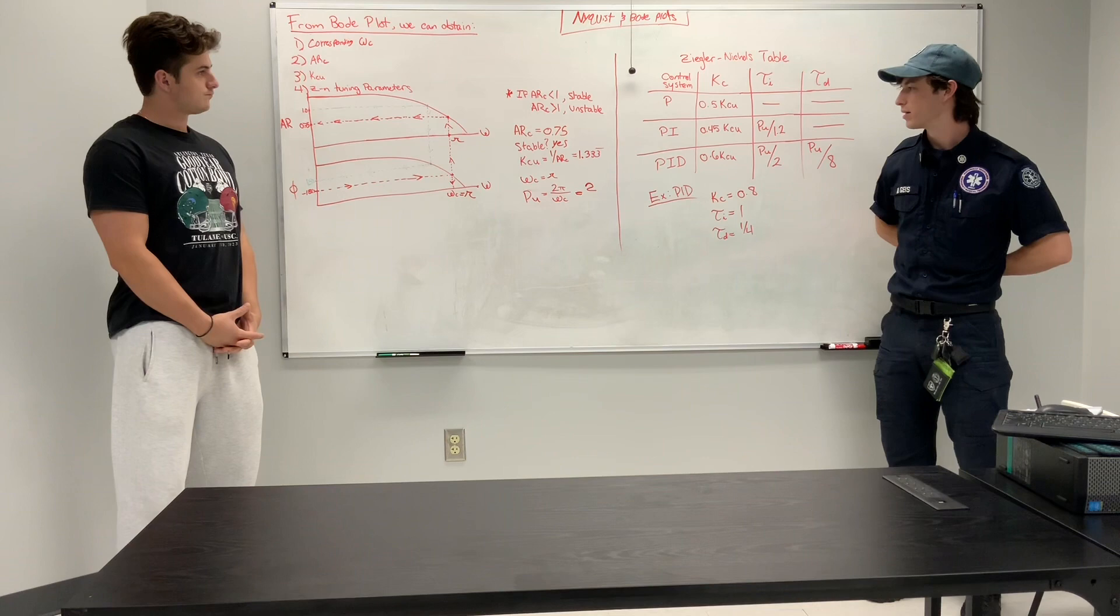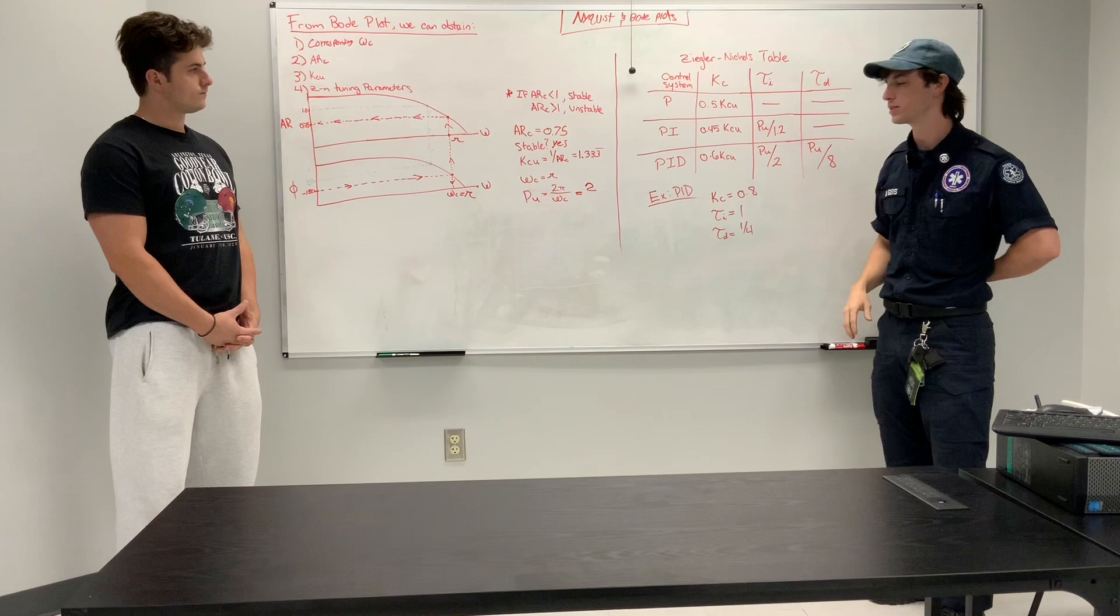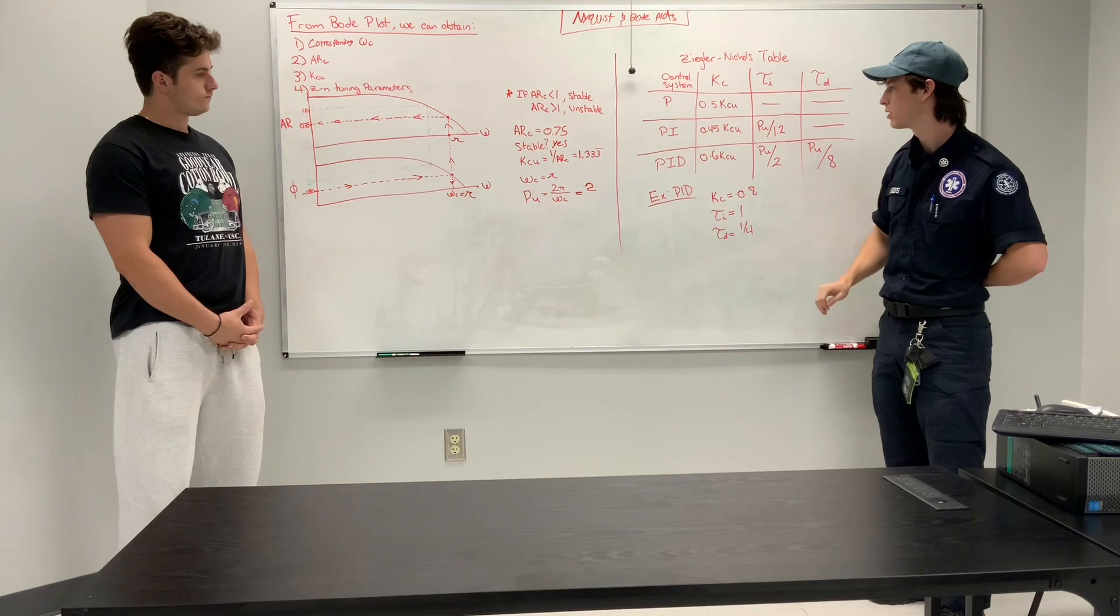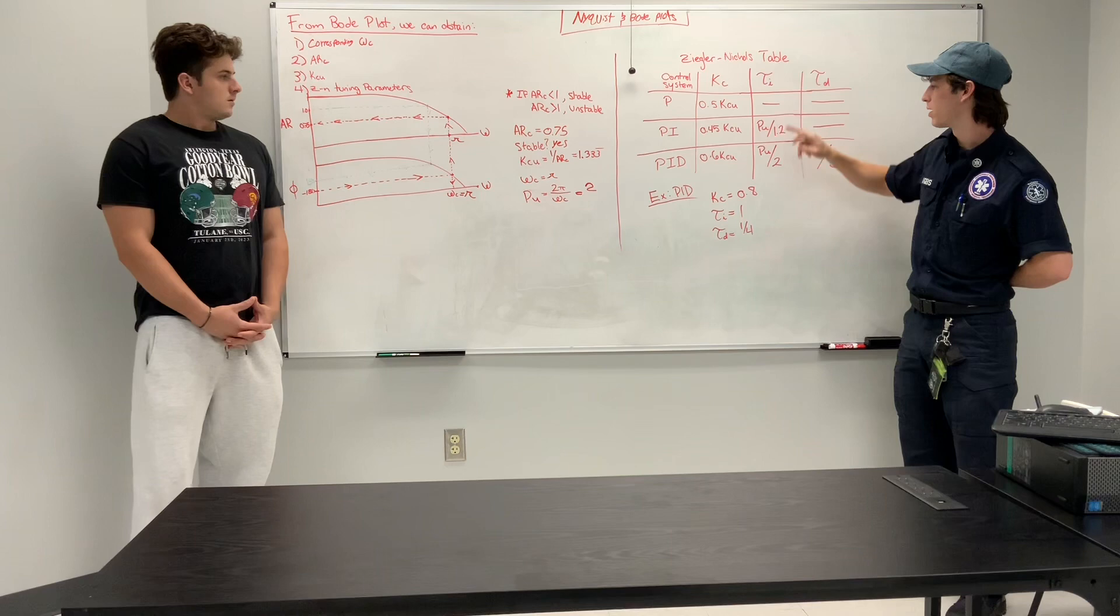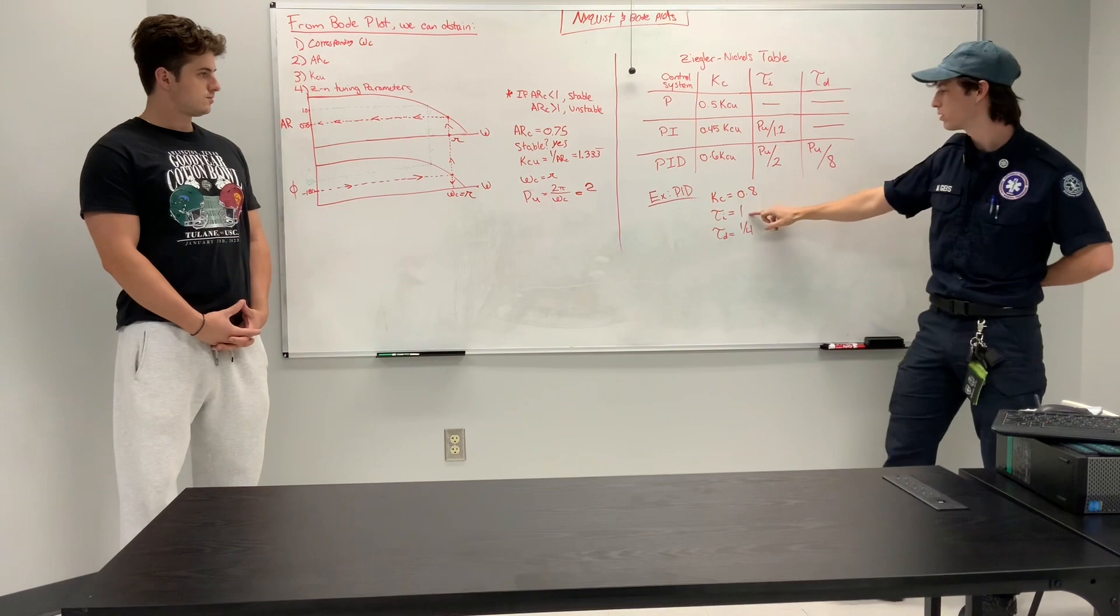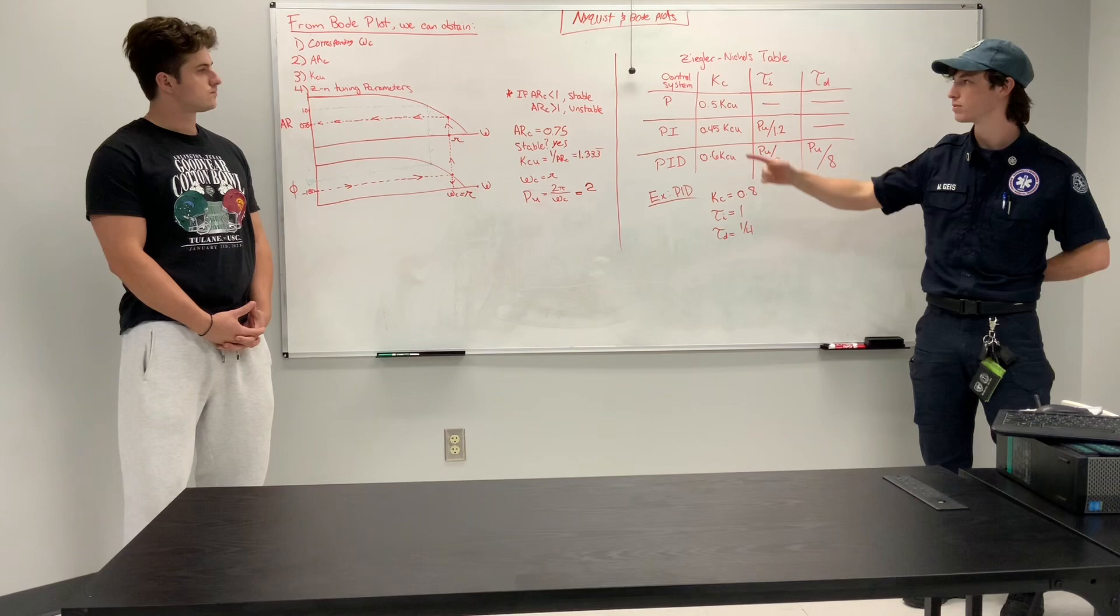So, from the information that you've gleaned from your Bode plot, you can take that over to a Ziegler-Nichols table, and pretty quickly determine the tuning parameters for your system, depending on the control system. So, for the instance of a PID controller, we go ahead and we look at this row. And for the KC column, we have 0.6 times KCU, so 0.6 times 1.33, which is about 0.8. For tau I, for the PID controller, it's PU over 2, so 2 over 2 is 1. And then tau D, we have PU over 8, which is 2 over 8, which is 1 fourth. So, as you can see, we've pretty simply and quickly determined our tuning parameters from this Bode plot.